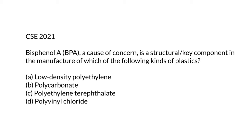The first question is from Prelims 2021. It reads: Bisphenol A, also known as BPA, a cause of concern, is a structural or key component in the manufacture of which of the following kinds of plastics? The options include low density polyethylene, polycarbonate, polyethylene terephthalate, and polyvinyl chloride. The keyword in this question is 'a cause of concern.'